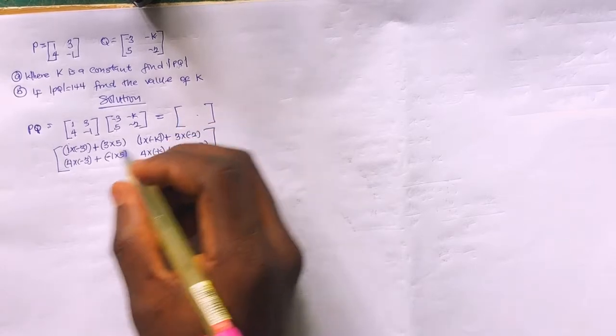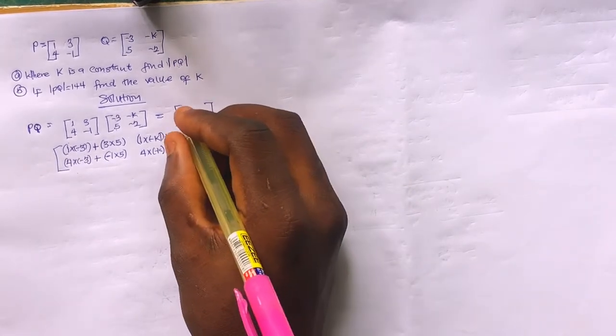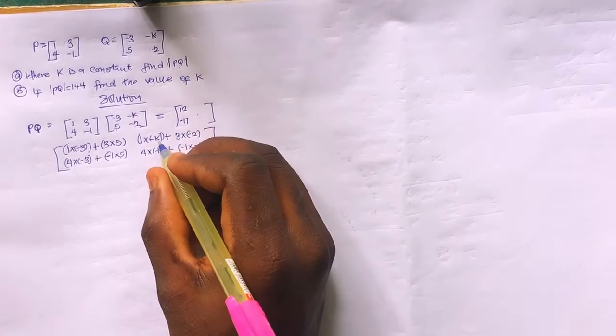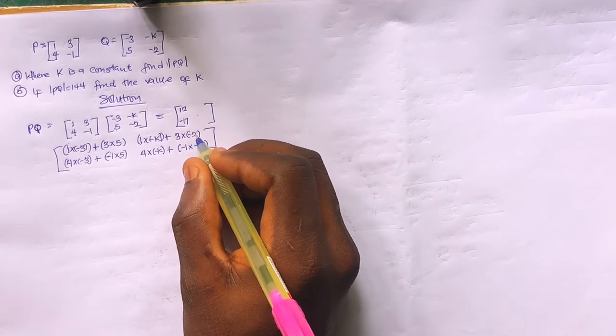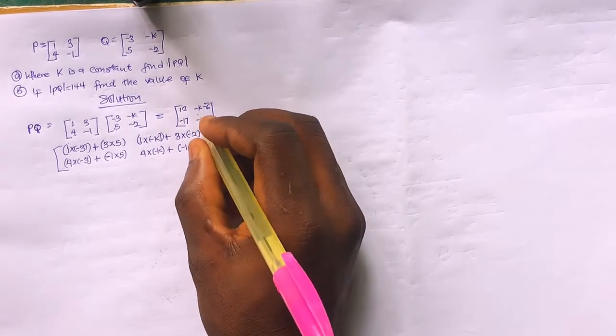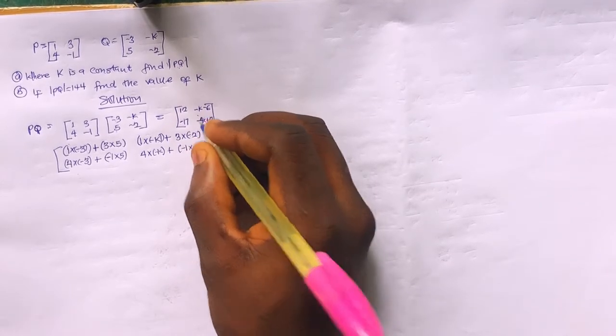Solving each entry: the first entry is -3 plus 15 = 12. The second entry is -k plus (-1) times (-2) — that's -k plus 2, but adjusting gives minus k minus 6. The third entry: -12 minus 5 = -17. The fourth entry: -4k plus 2.